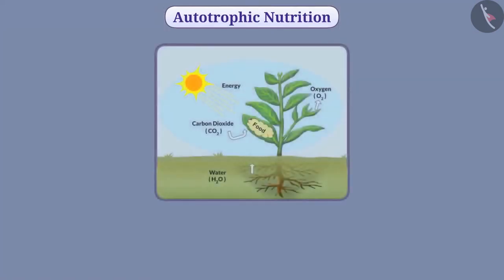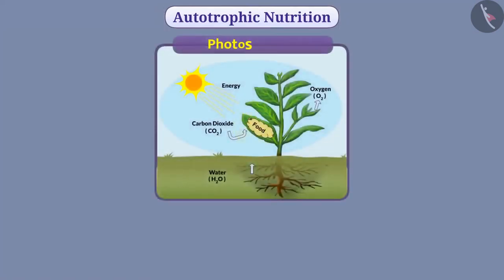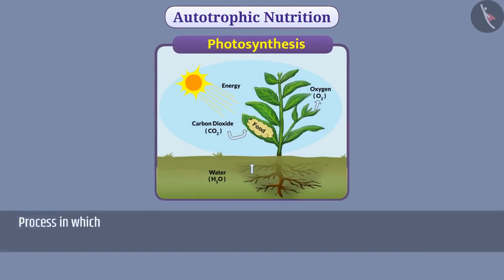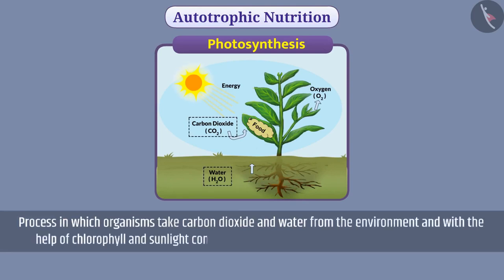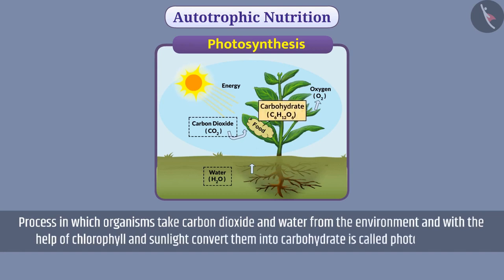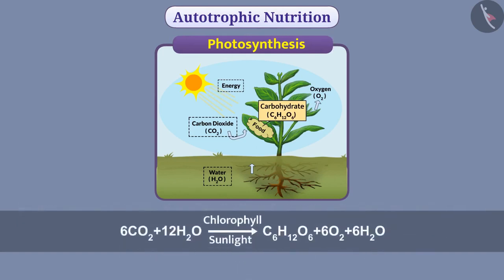Let us understand autotrophic nutrition in detail. In autotrophic nutrition, organisms make their own food through the process of photosynthesis. The process in which organisms take carbon dioxide and water from the environment and with the help of chlorophyll and sunlight convert them into carbohydrate is called photosynthesis. They get their energy requirement from the carbohydrates. For photosynthesis, carbon dioxide, water, chlorophyll and sunlight are necessary.